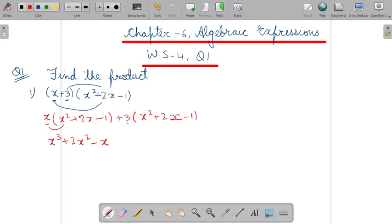Now similarly we will do for 3, multiply 3 with x square, 3 with 2x and then 3 with minus 1. So this will become 3x square plus 6x minus 3. Now what should be the next step?